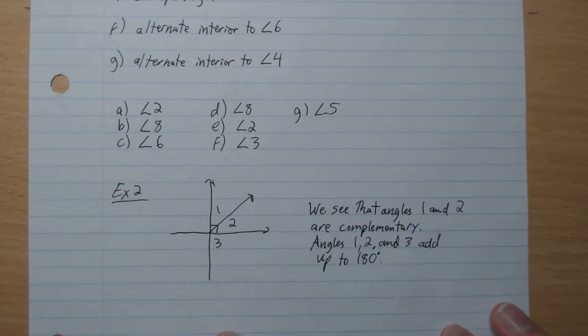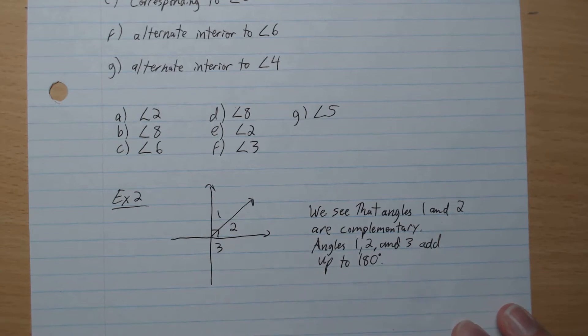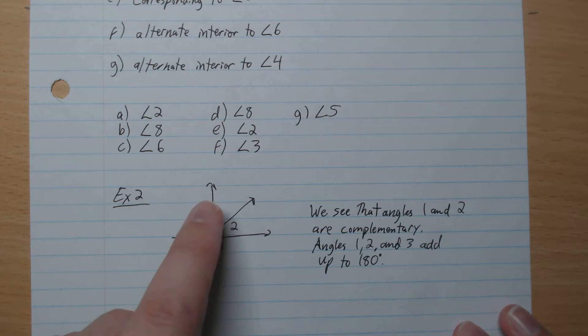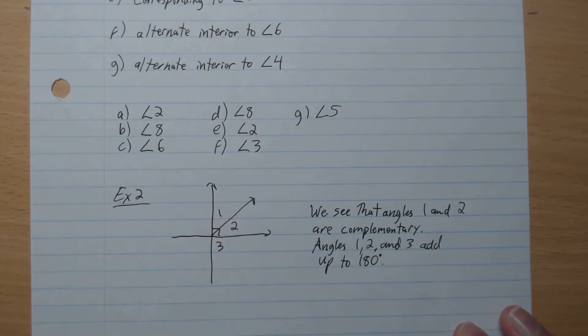So a quick little example. We see that angles 1 and 2 are complementary. And then we know angles 1, 2, 3 add up to 180.